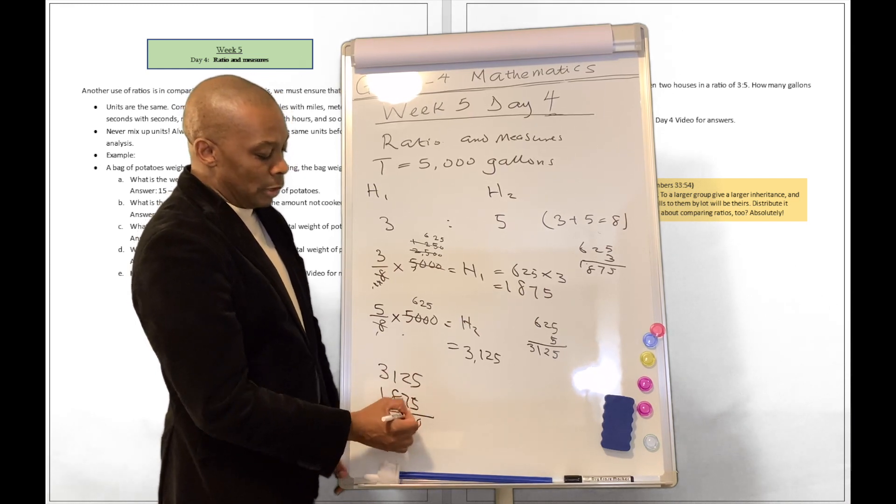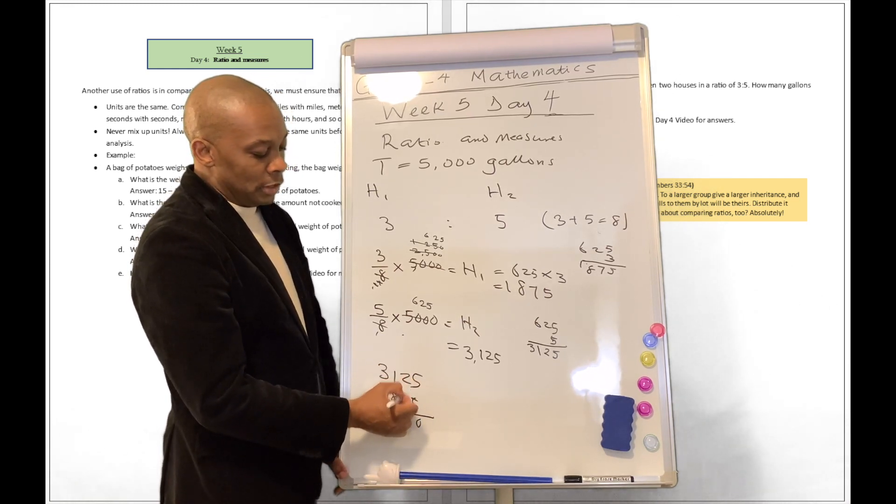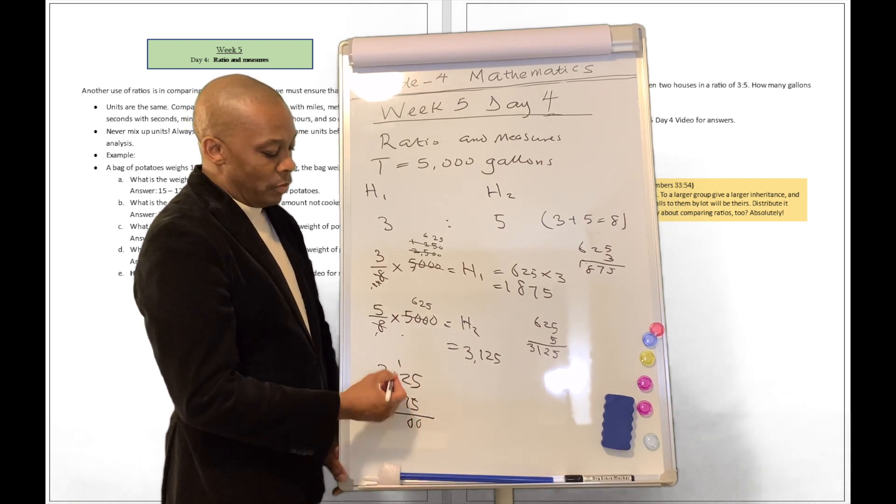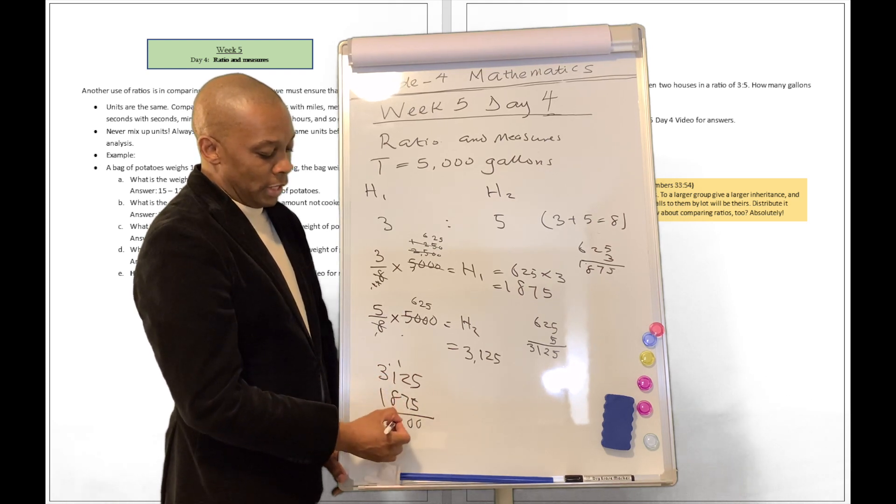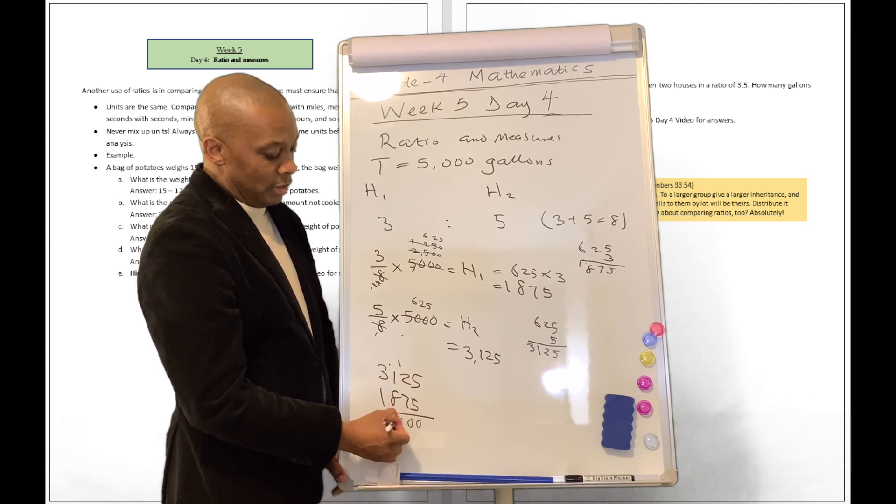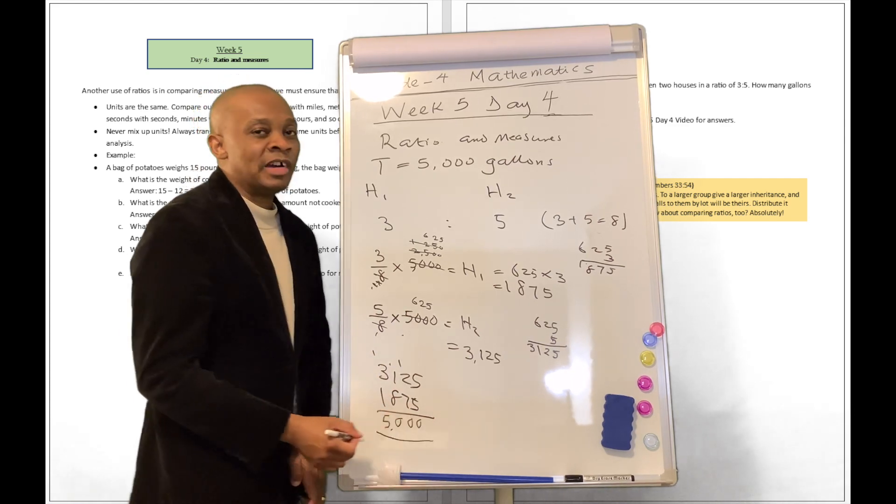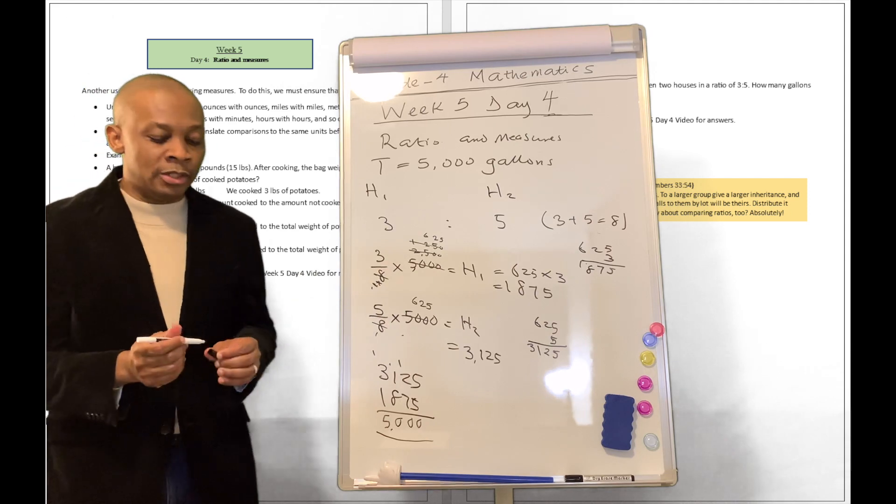If you were to add both together just to make sure that our calculation is right, let's prove that. 5 plus 5 is 0, carry 1 over. 1 plus 2 is 3, 3 plus 7, that's 10. Carry 1 over, 1 plus 1, that's 2. 2 plus 8, that's 10. Carry 1 over, and this is 5,000. So we came back to 5,000 to show that our calculation is correct.